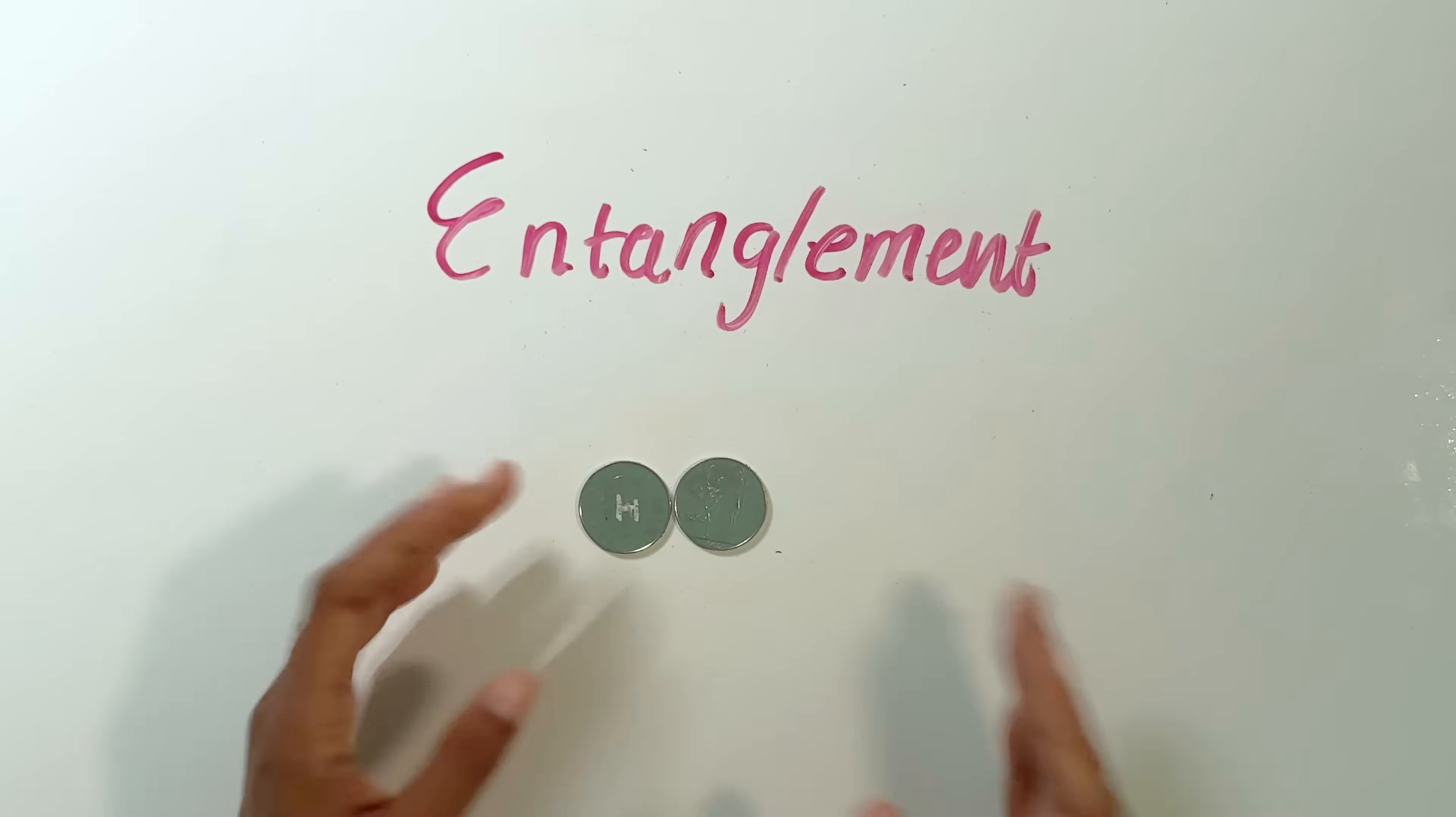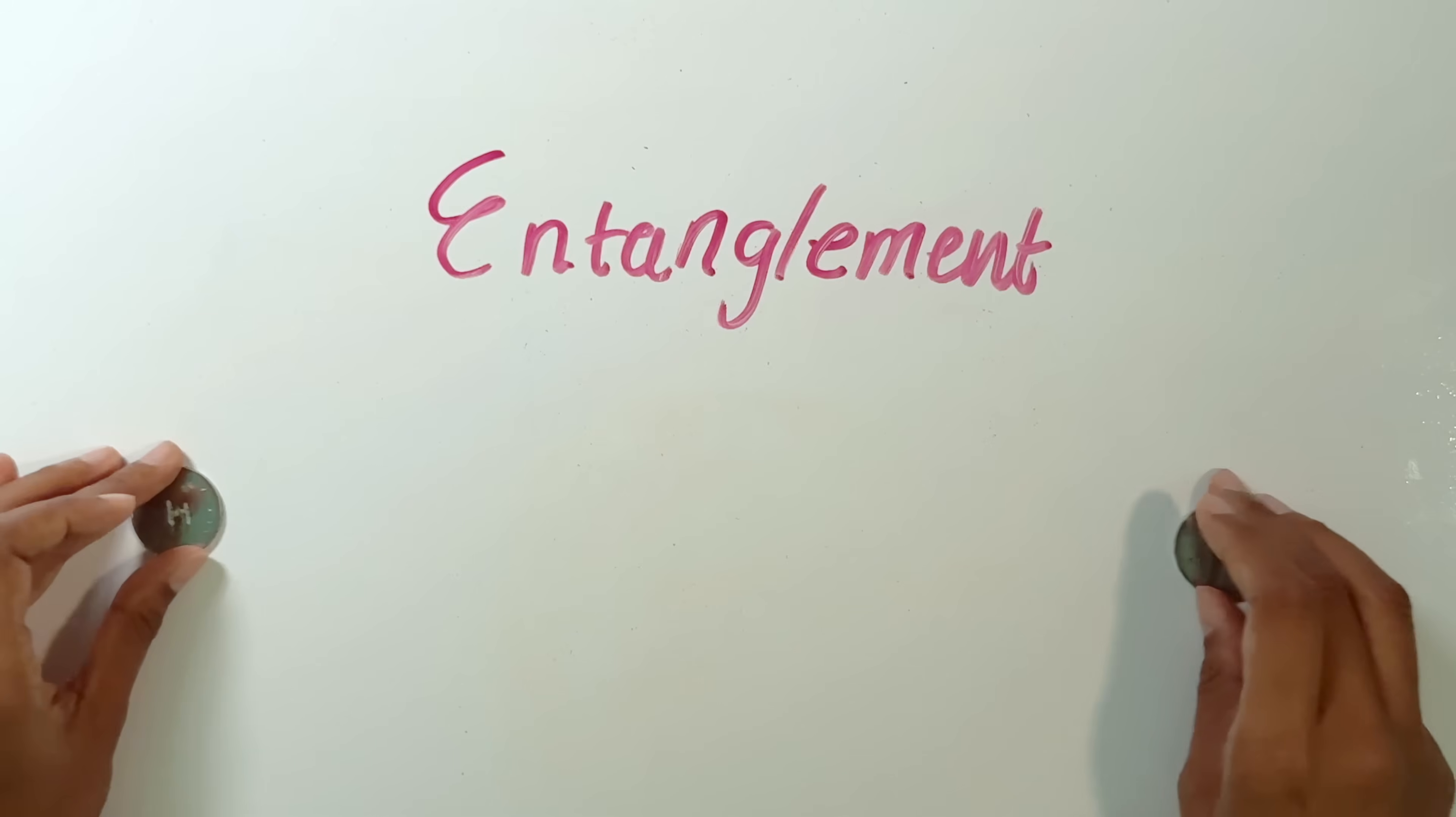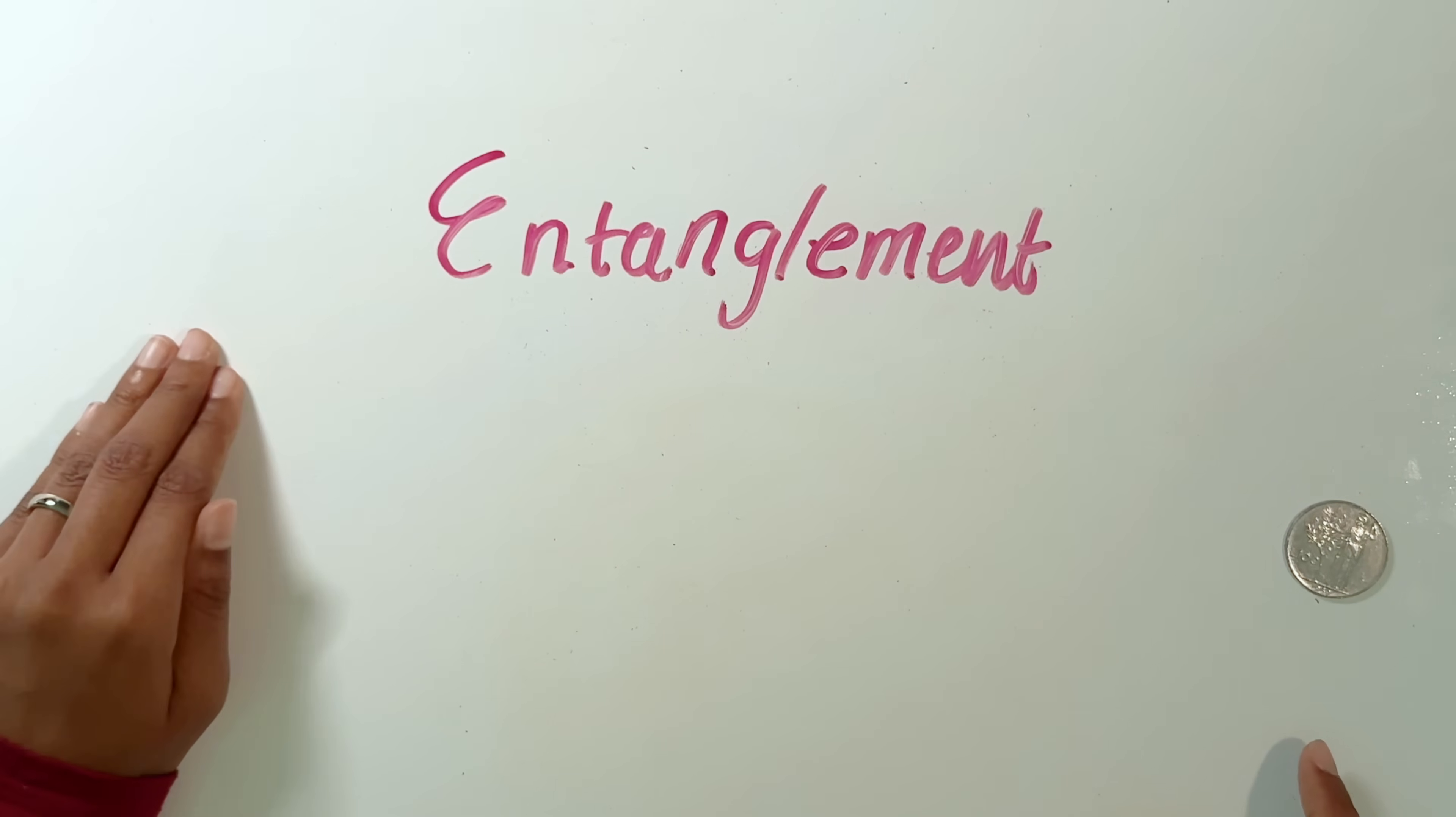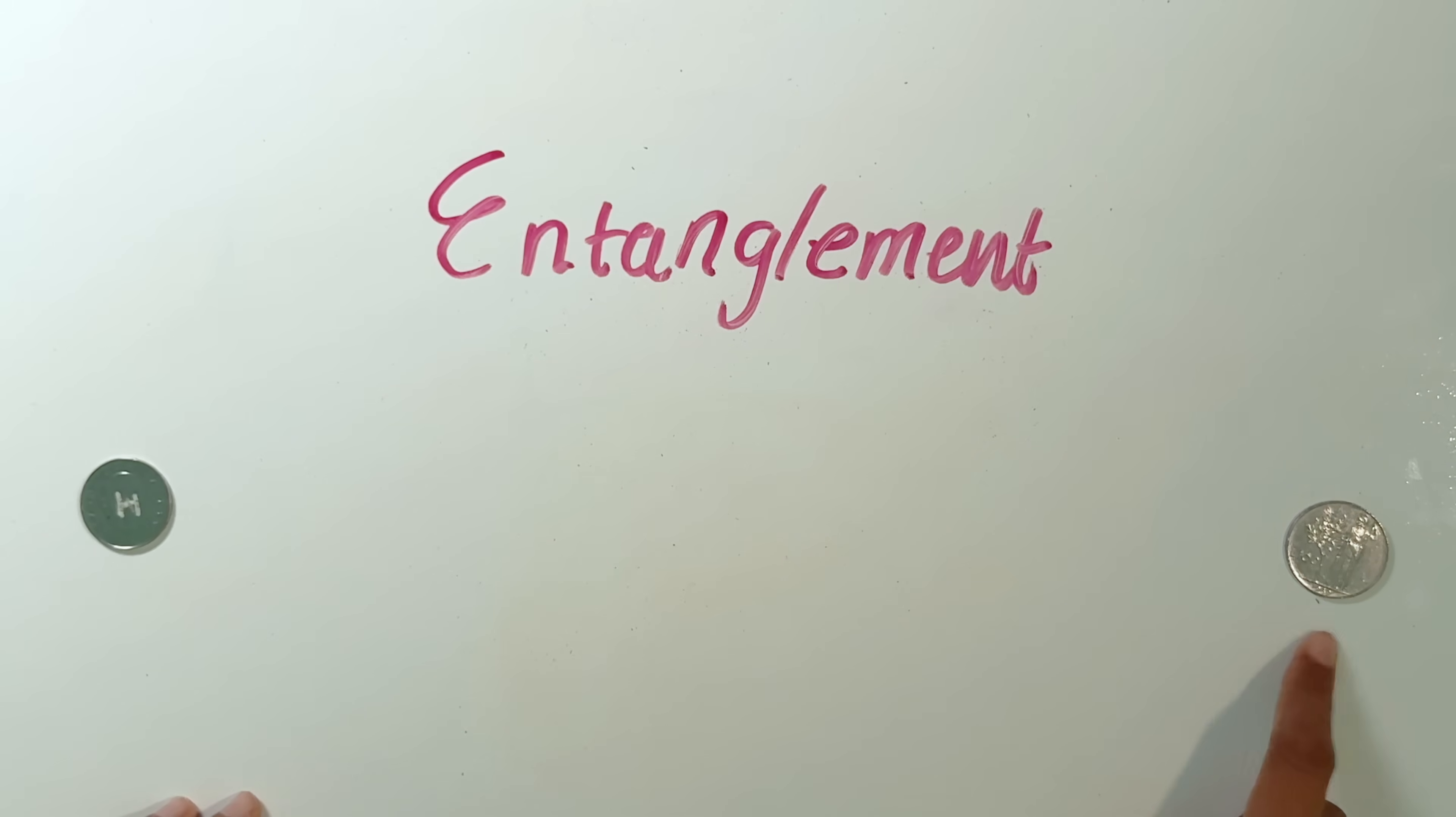This is not entanglement. This is ignorance about a joint distribution. That's all. When these two particles ended up going very, very far away from each other, in reality, this one always had its identity and that one always had its identity. So me finding out the identity of this coin doesn't genuinely affect that coin. It only affects my own knowledge of what that coin is doing. But the entanglement situation is quite different.